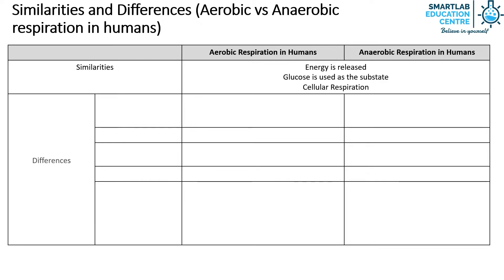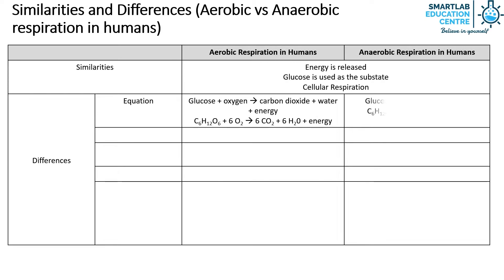The first difference between aerobic and anaerobic respiration is the equation, as shown. Aerobic respiration can only occur in the presence of oxygen, whereas for anaerobic respiration, it occurs in the absence of oxygen.